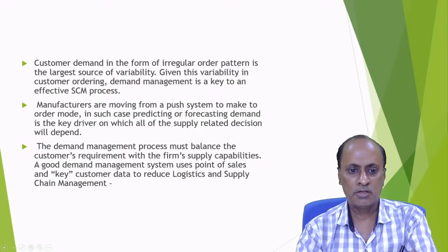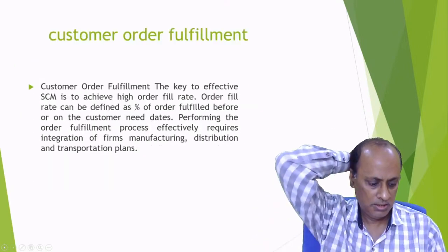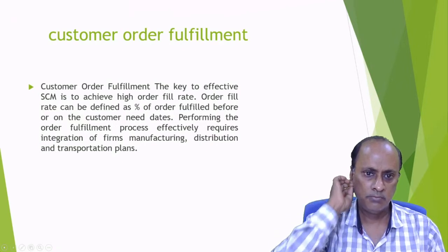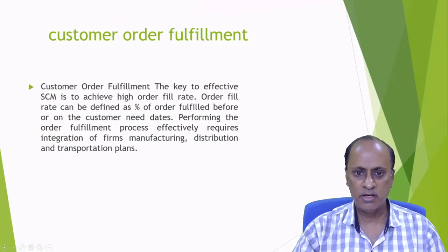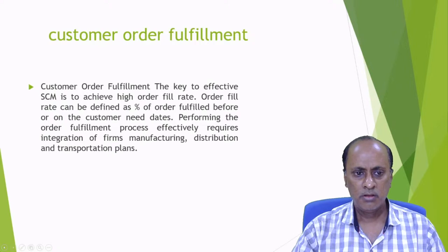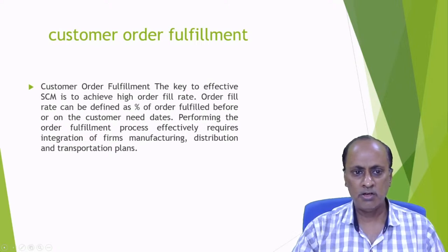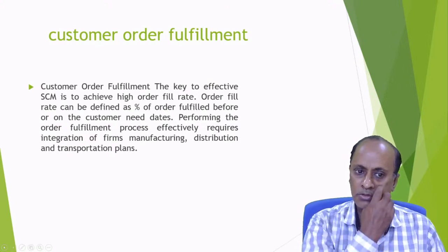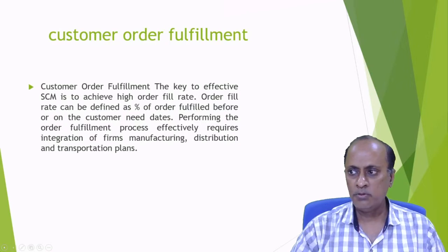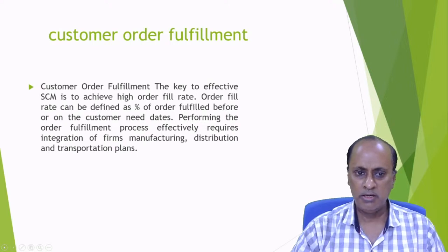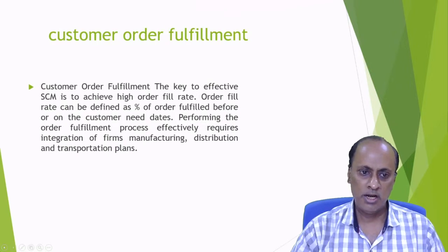The third component is customer order fulfillment. The key to effective SCM is to achieve a high order fill rate. Order fill rate is the percentage of orders fulfilled before or on the customer-needed date — if the percentage is 90%, the supply chain is very effective. Performing the order fulfillment process effectively requires integration of the firm's manufacturing, distribution, and transportation; order fulfillment will only be effective through integrated actions, not individual ones.